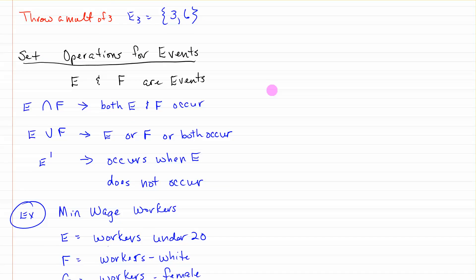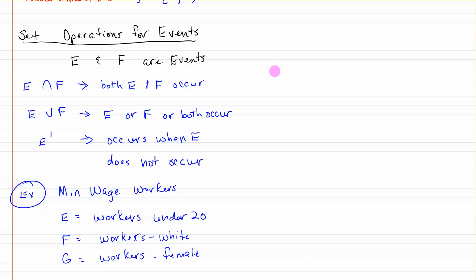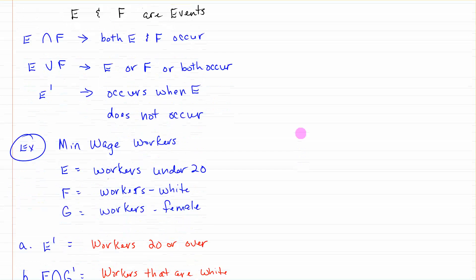There are set operations for events. Say E and F are events. E intersect F means both E and F occur. E union F means E or F or both occur. E prime occurs when E does not occur. So E prime is everything except E, or occurring when E does not occur.